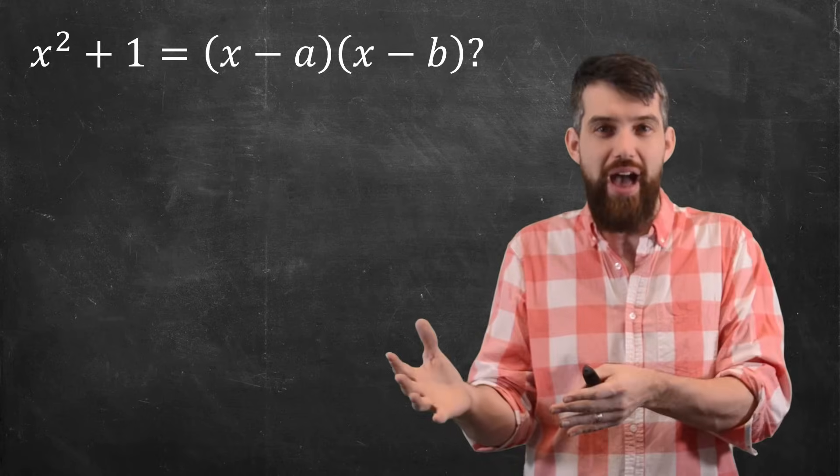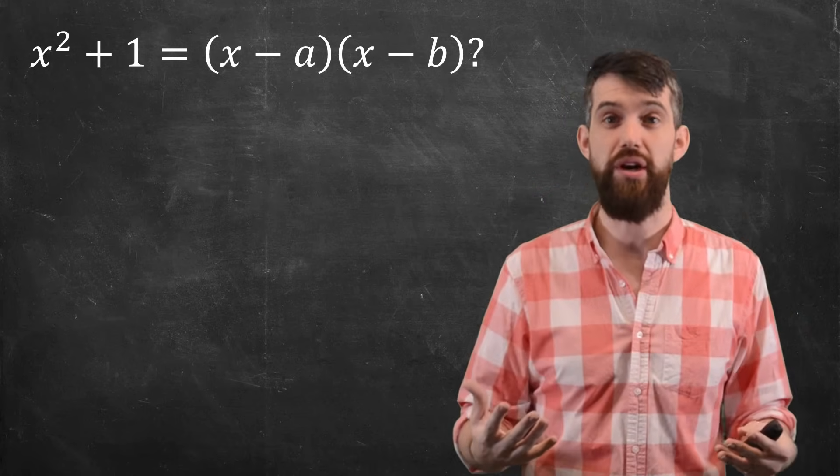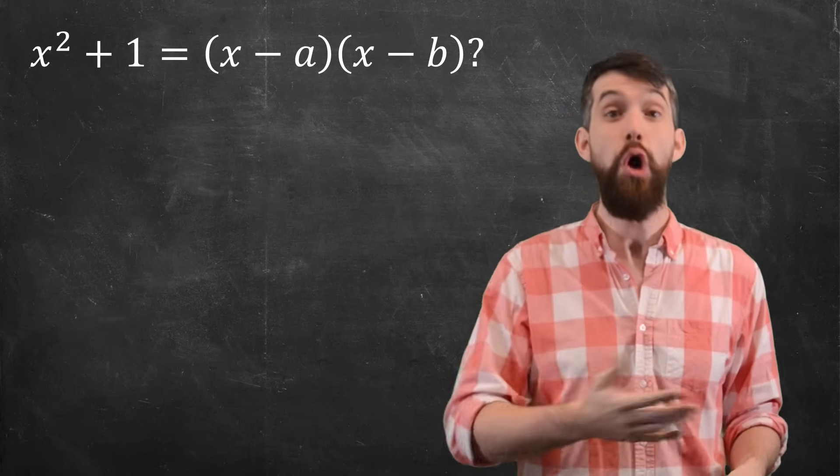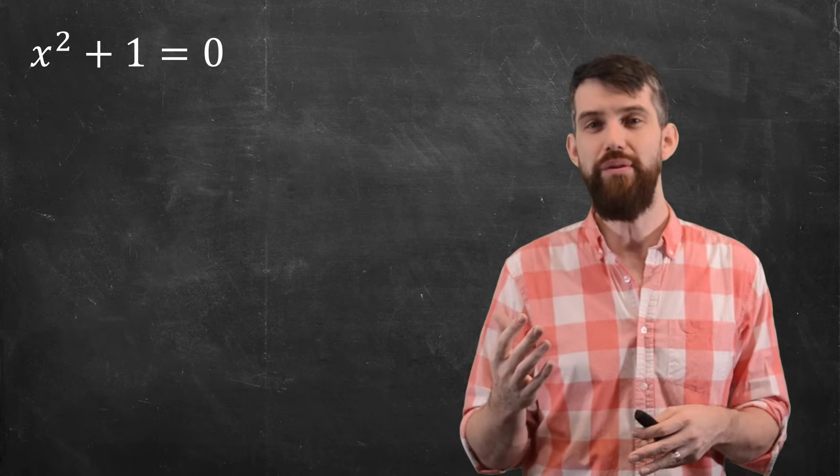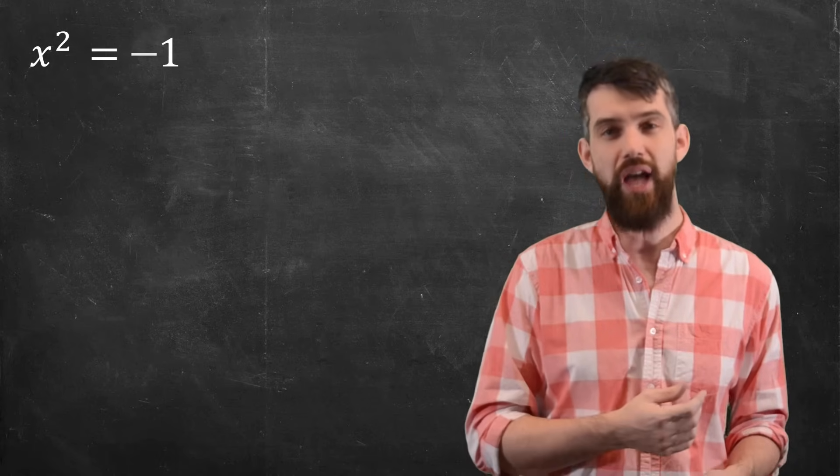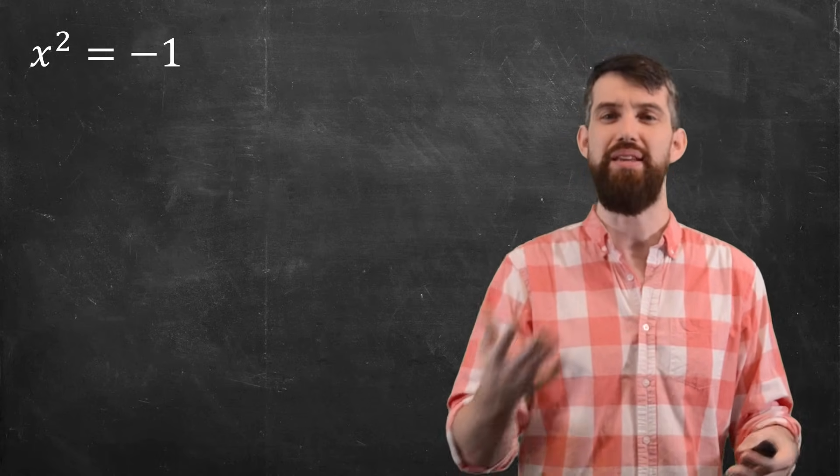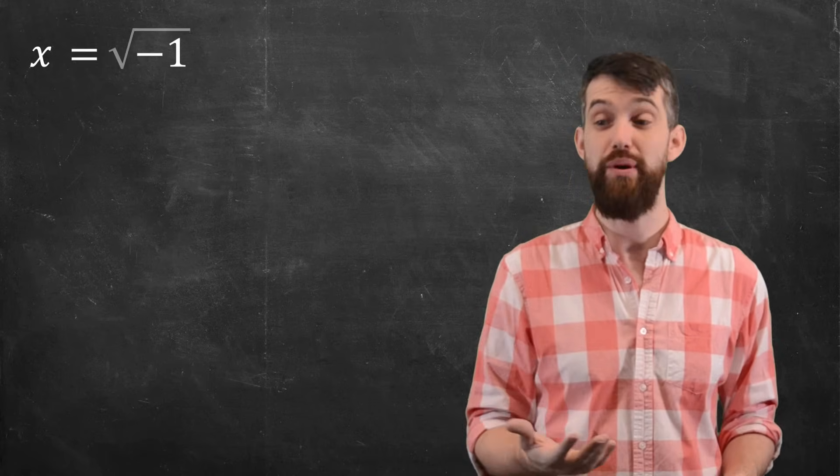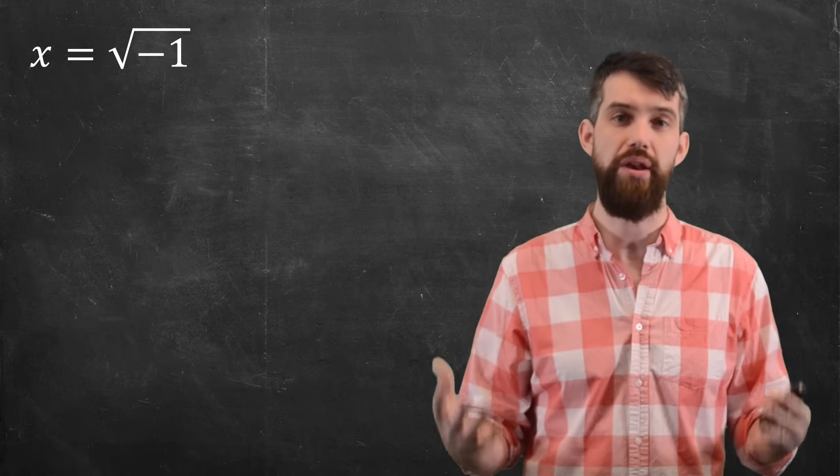The question is, can we factor that as a product of two linear terms? Well, if we could, then the a and the b here would be zero. However, there are no real zeros of this. If you move the one to the other side, then you're asking, I want to square a number and have that be negative. It's just not possible. Or alternatively, you're asking what is the square root of minus one. It is not a real number.